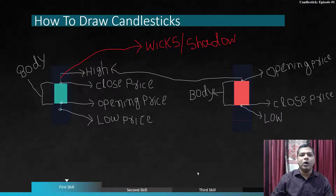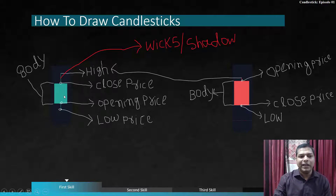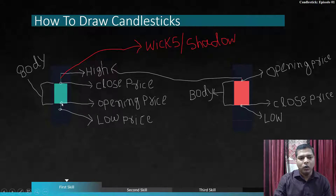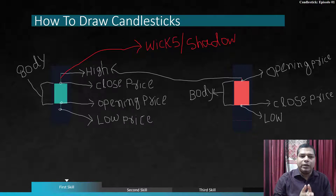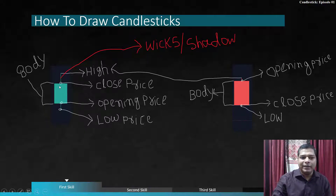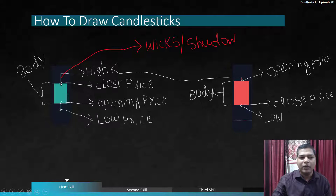Now let's see how to draw a candlestick. On the left side is a green candle. The lower level is the opening price — the candle opens and prices go up. Once the price goes up, the body of the candle prints either white or green. This is the high shadow — the highest price — and when the candle closes, that is the closing price.